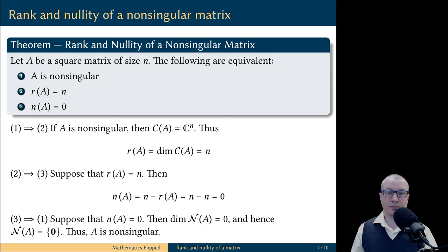This proves that statement 3 implies statement 1, and if you look at the entirety of this proof, you will see that we have proved a cycle of implications. And therefore, if you start with any of these statements, you can follow along this cycle to arrive at any other statement. In other words, all these statements are equivalent to each other.